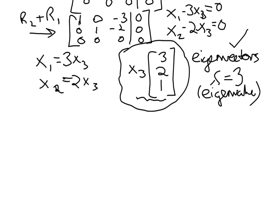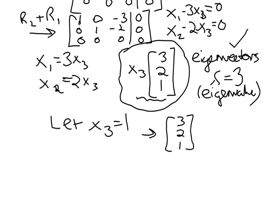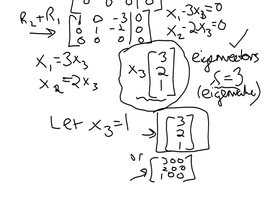So first, yes — three is an eigenvalue for this matrix. There are infinitely many corresponding eigenvectors; all vectors of this form qualify. If the problem asks for one specific eigenvector, you can choose any value of x3 other than zero. Letting x3 equal one gives the eigenvector [3, 2, 1]. Something like [300, 200, 100] would also be valid, but [3, 2, 1] is the more reasonable answer.